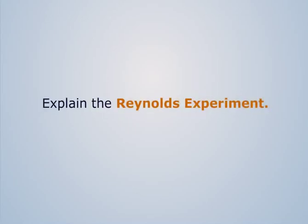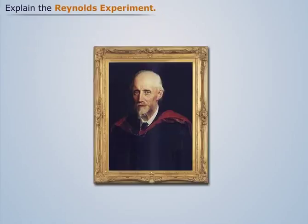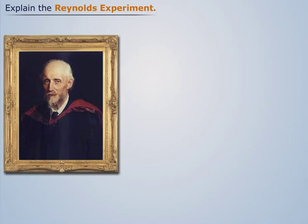In the year 1883, Sir Osborne Reynolds performed an experiment to find whether the flow of fluid is laminar, transition, or turbulent.